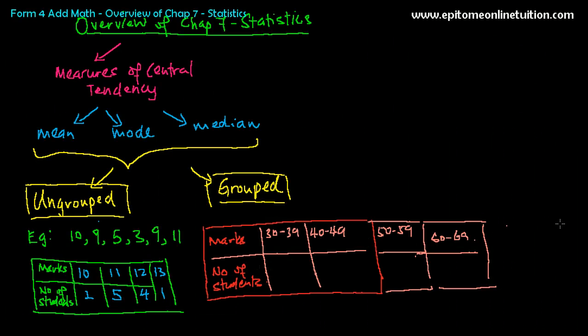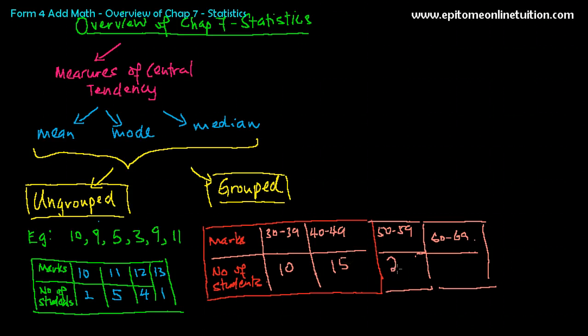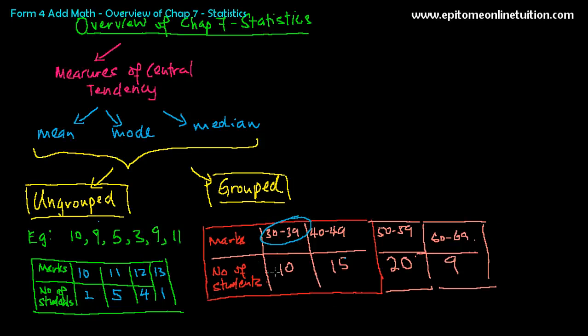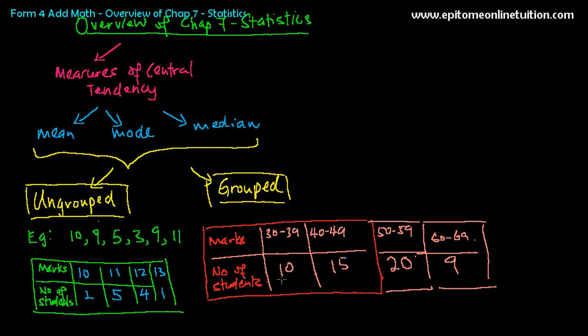So marks for Add Math, you get people scoring from between maybe 30 to 39, and you get people scoring maybe from 40 to 49, then 50 to 59, and let's say 60 to 69. So these are, this is called Grouped Data. Let's say 10 students got this, let's say 15, and let's say 20, and let's say 9. So what is the difference between Grouped and Ungrouped Data? There is a range of numbers here. The data is from 30 to 39, 40 to 49, 50 to 59. It's no longer one single data. The method to find Mean, Mode, and Median from Grouped Data will be different from Ungrouped.